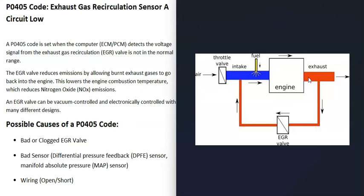Basically, exhaust gases go up to the EGR valve, which is controlled by the computer. The computer opens or shuts the EGR valve to let exhaust gases go back up into the intake and into the engine, lowering the combustion temperature to help reduce emissions. When you get a P0405 code, the computer is seeing some kind of problem with the EGR valve.